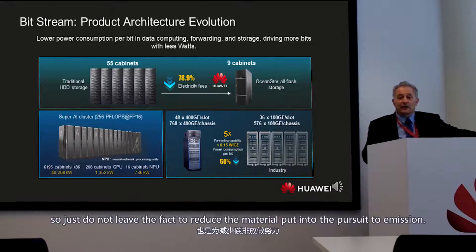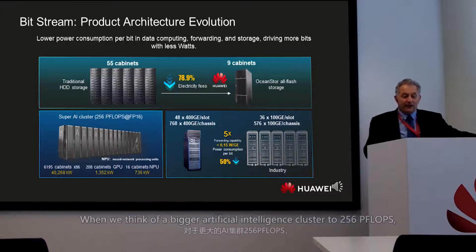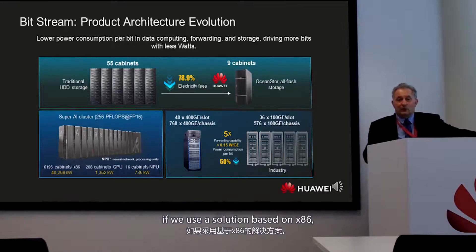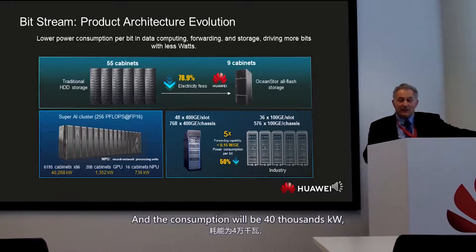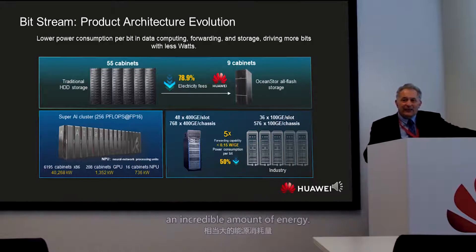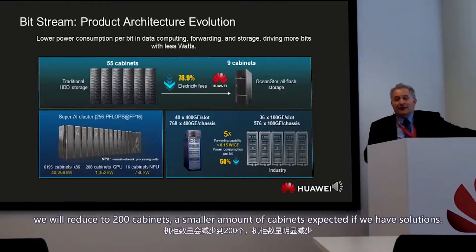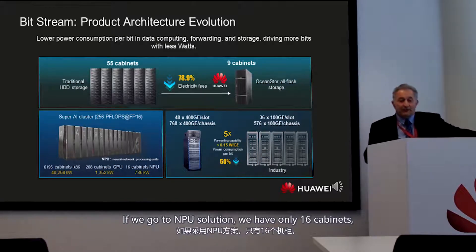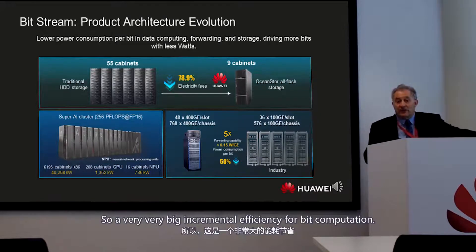The second point is computing efficiency. For a large AI cluster reaching 256 petaflops, an x86-based solution requires 6,000 cabinets consuming 40,000 kW. Moving to a GPU solution reduces this to 200 cabinets at 1,300 kW. Going further to an NPU solution reduces it to just 60 cabinets at 700 kW — a very significant improvement in computational efficiency.